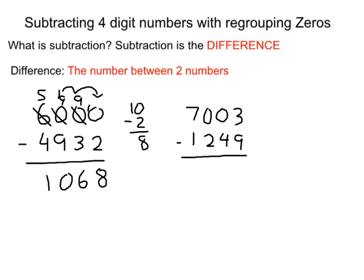Now we have another question here. It's 7,003 minus 1,249. Now a slight difference to this question is in the ones column, we already have a whole number, which is 3. Now it's the same thing. This 3 is going to be subtracted by 9, which is not possible.